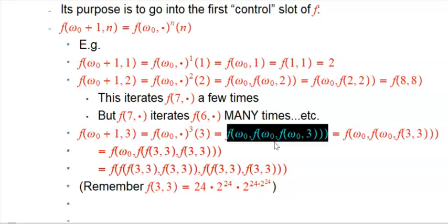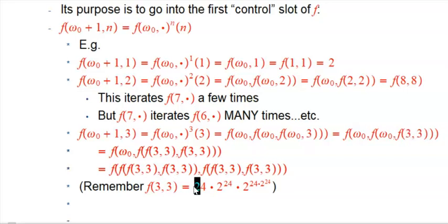f(ω₀ + 1, 3): we're going to iterate the f of ω₀ level function three times on three. The first diagonalization doesn't get you that much—f(3, 3), if you want the explicit number, is 2^(2^24) or 2^(2^24+3), a not incredibly huge number smaller than the number of quantum states in the observable universe. Not totally crazy. But then we take that number and put it into f of ω₀, which means we're putting that number into the control argument and the input argument.